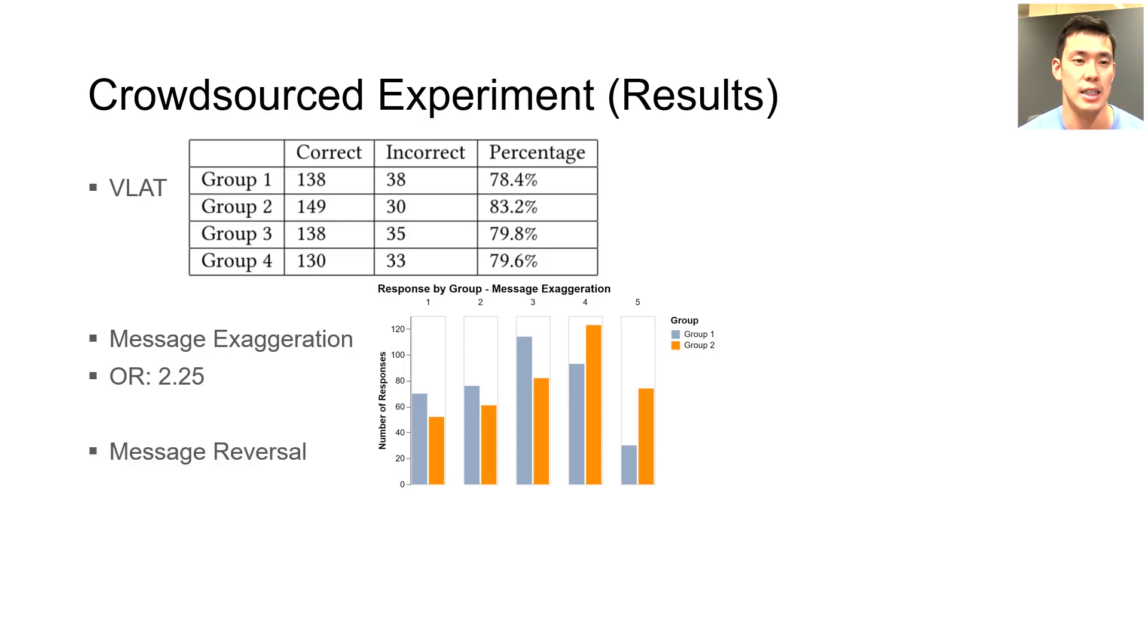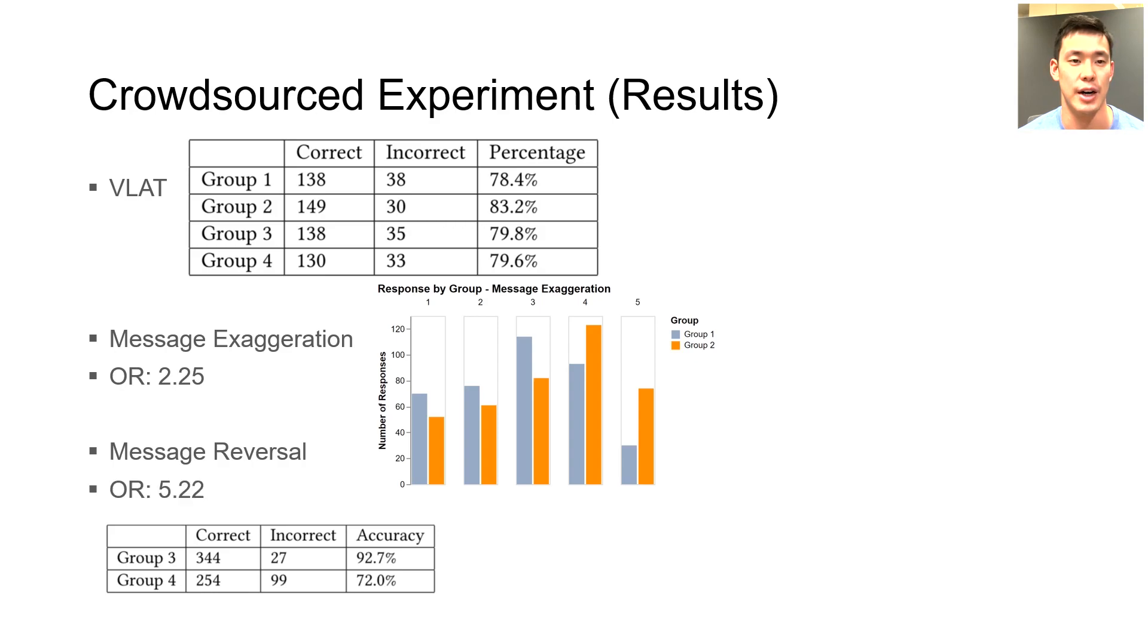Finally, we analyzed the results of the message reversal experiment. Group 3 participants who had access to the annotations were able to spot inverted y-axes, and thus were likely to answer the question with higher accuracy. In the odds ratio test, group 3 participants on average were 5.22 times more likely to provide a correct response over an incorrect response.